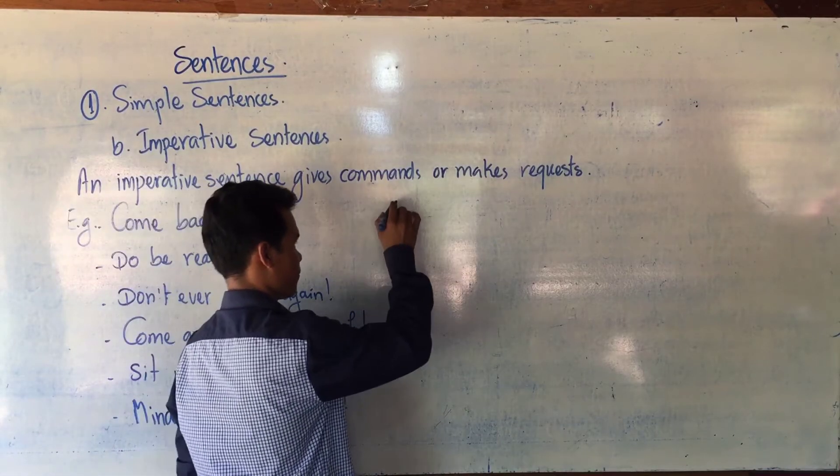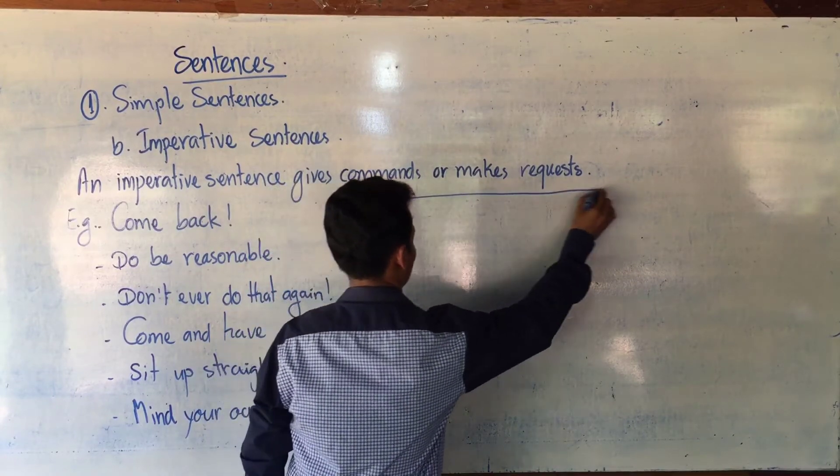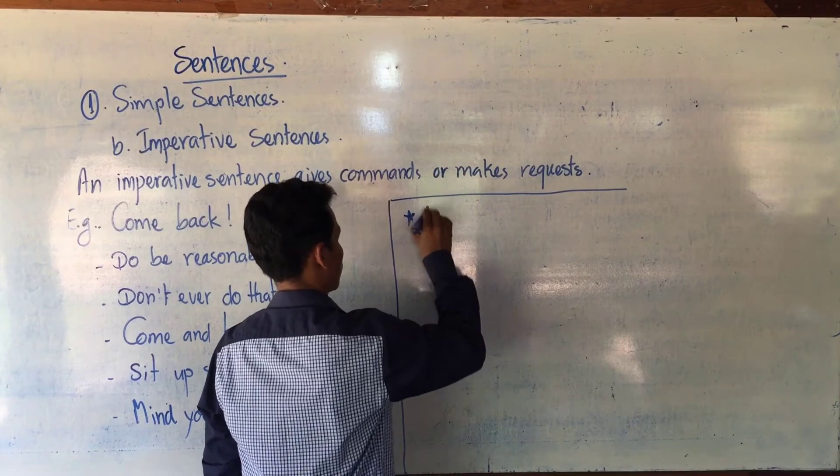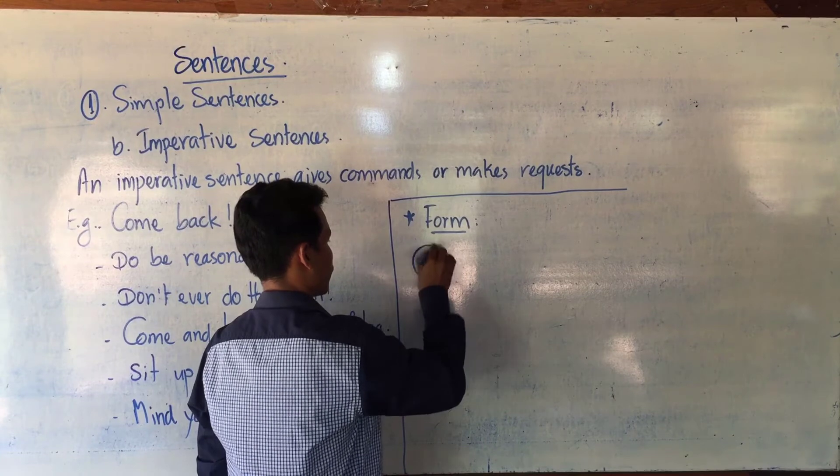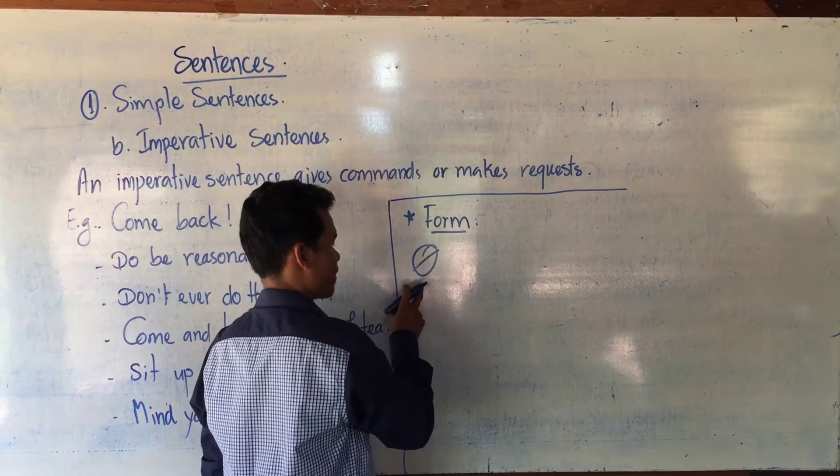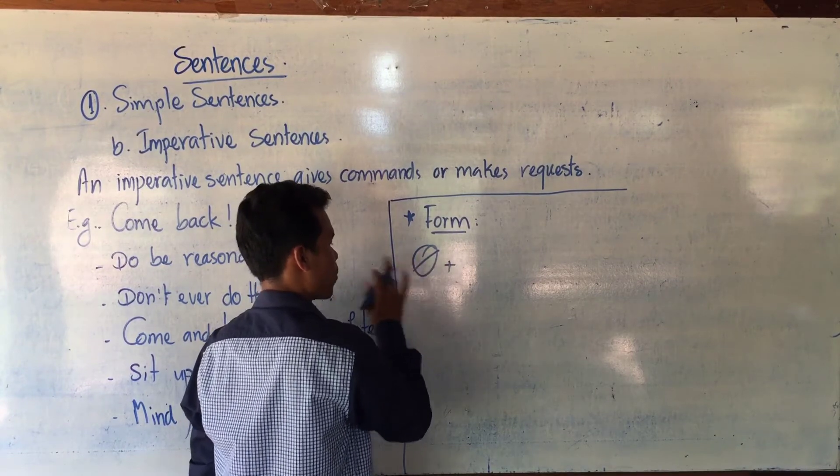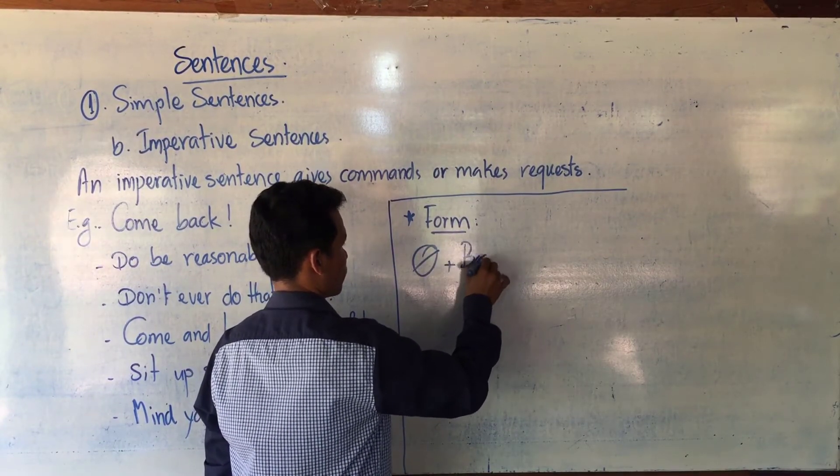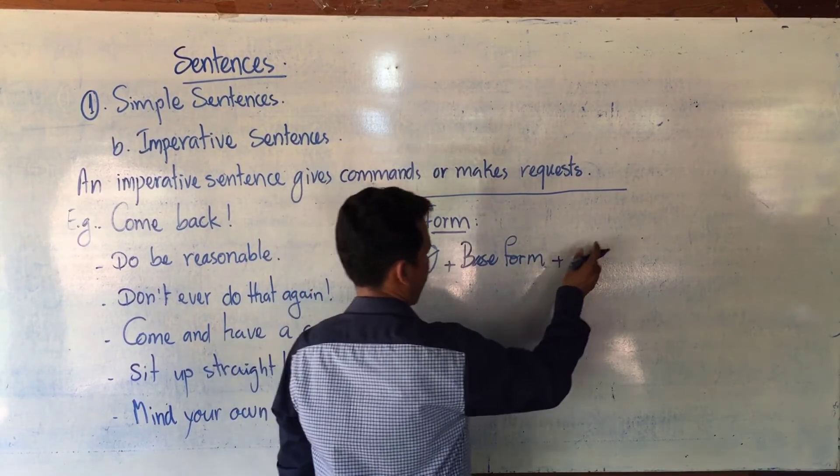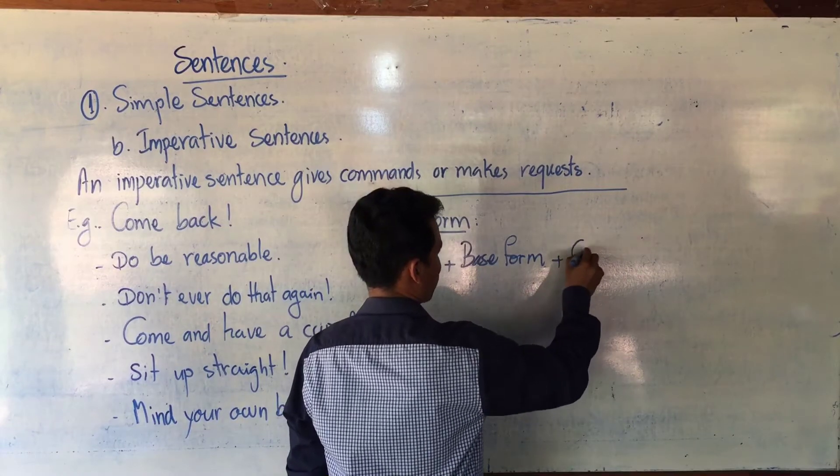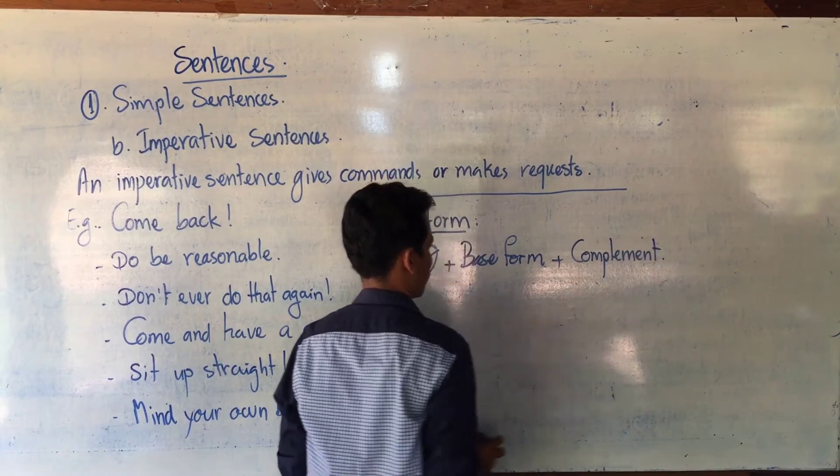So its formula is... Phi means the hidden subject you already mentioned. So it means that imperative sentence has no subject. Base form, object, or you can write complement.